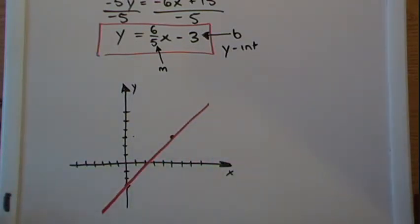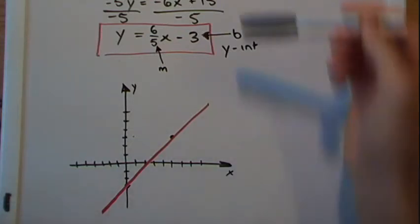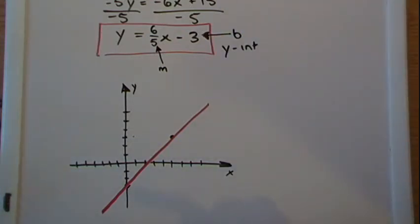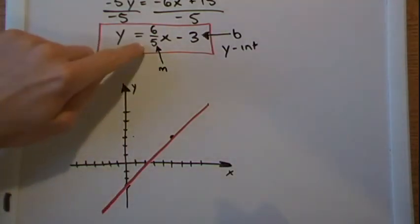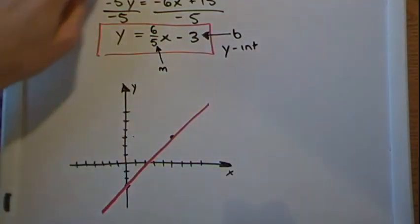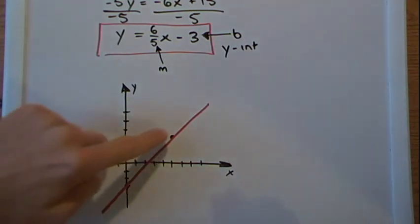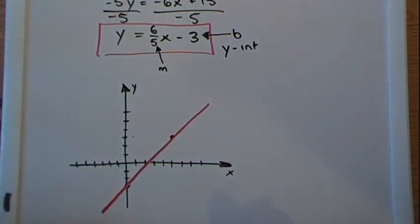So this is a very useful method when you're given pretty simple equations like this. You just solve for y and then you will be given the m and the y-intercept through y equals mx plus b. You plug these points out and then you just connect the dots.